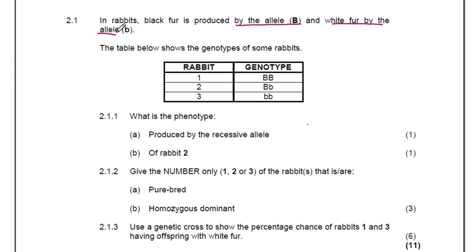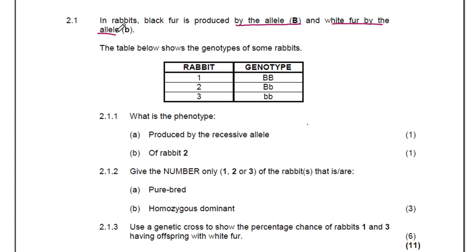When we do a dihybrid cross, we are looking at two traits or two characteristics. Now whenever you come across a monohybrid question, you need to be able to determine the trait they are talking about in the question. That trait or gene is going to have its alleles, and you are normally given two possible alleles. The characteristic we are talking about here is fur color — black fur and white fur. That's the trait we are looking at.